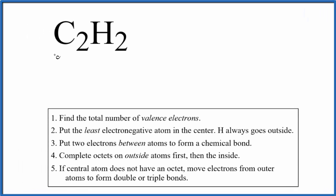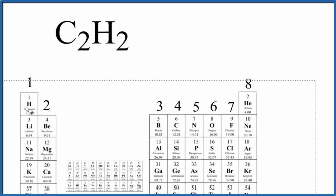Let's draw the Lewis structure for C2H2. This is acetylene. It's also called ethyne. That's the IUPAC name. To start out with Lewis structures, we count the total number of valence electrons, and the periodic table can be really helpful for that.